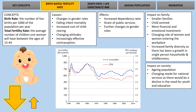The first group we're going to look at today is birth rate - that's the first trend pattern we're going to talk about. The key concepts are: birth rate, which is the number of live births per thousand of the population per year, and fertility rate, which is the average number of children one woman will have between the ages of 15 and 44.